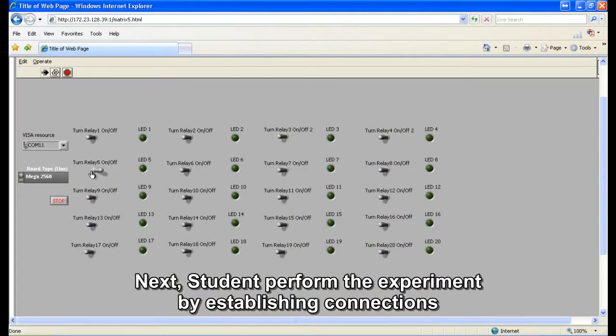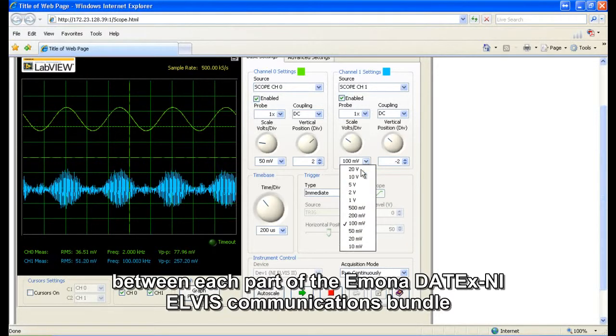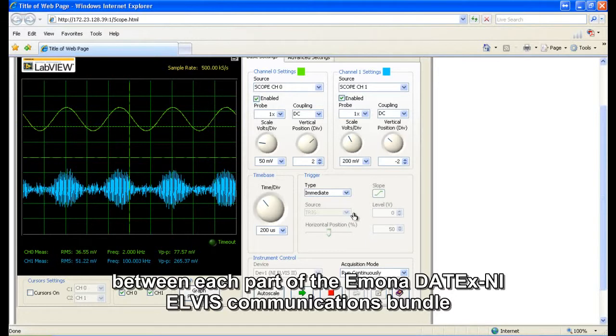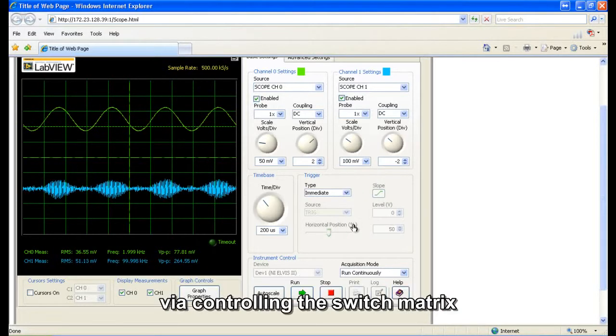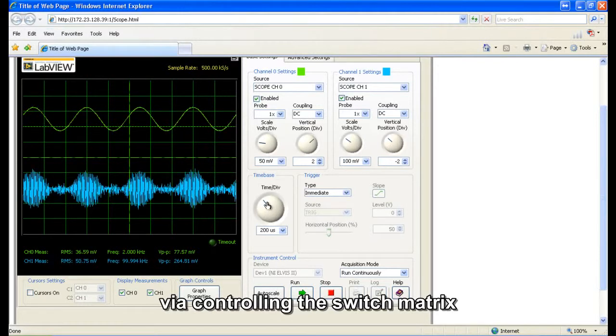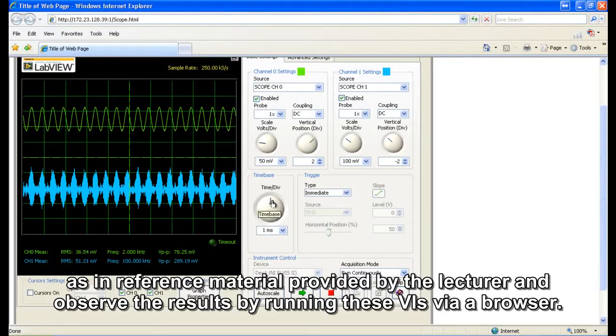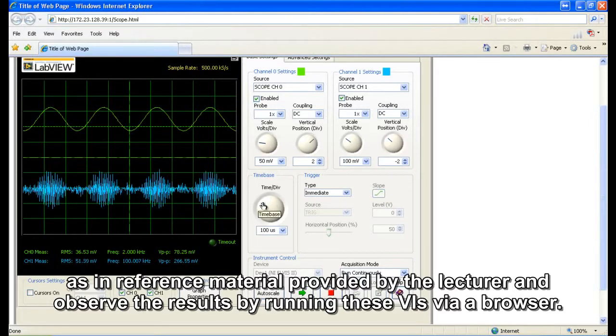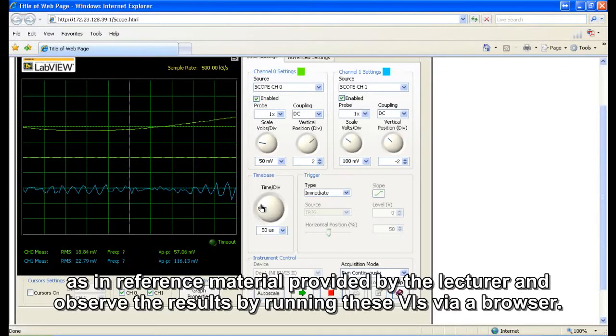Next, students perform the experiment by establishing connections between each part of the Emona digital and analog communication bundle via controlling the switch matrix as in reference material provided by the lecturer, and observe the results by running these VI files.